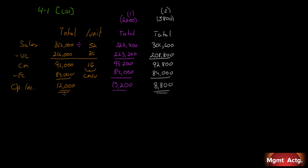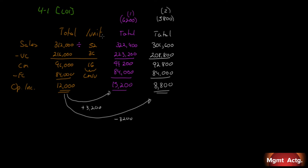Less fixed costs of $84,000 gives us $8,800. We went from 12,000 going up 200 units, which was an increase of $3,200. Going down 200 units should be the opposite — and we find a decrease of $3,200. This makes sense: these are symmetrical. If we start at 6,000 and add 200, then subtract 200, we should get the same difference with opposite signs.